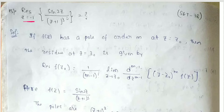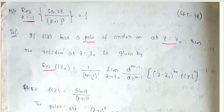The defined formula: if z has a pole of order m at z equals to z-naught, then the residue at z equals to z-naught is given by the formula — residue f(z-naught) equals 1 by (m-1) factorial, limit z tends to z-naught, (m-1)th derivative of (z minus z-naught)^m into f(z).